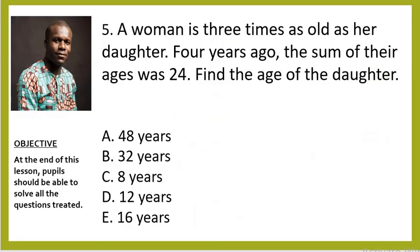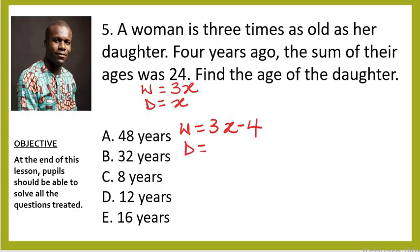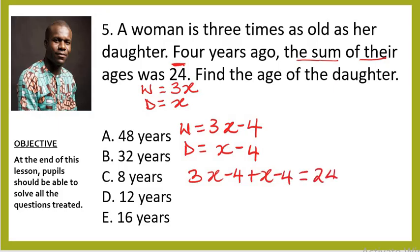Question five — algebra: a woman is three times as old as her daughter. If the daughter is x years old, the woman is 3x. Four years ago, the sum of their ages was 24. Four years ago the woman's age was 3x − 4 and the daughter's age was x − 4. The sum equals 24, so: (3x − 4) + (x − 4) = 24.